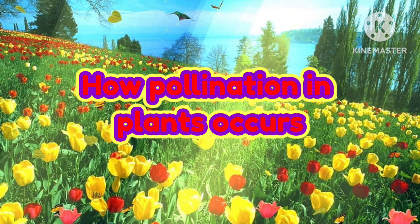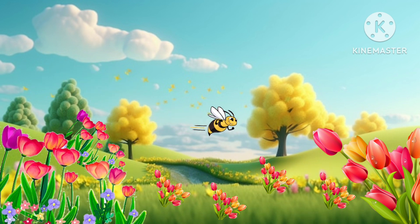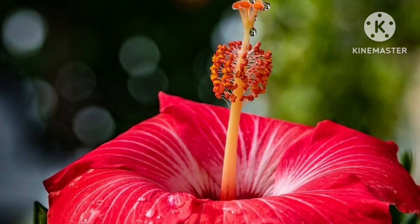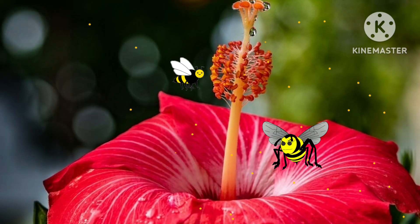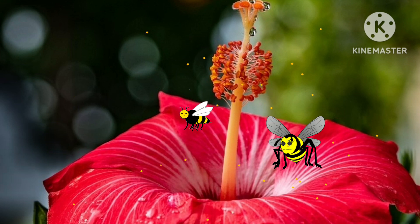Now let's study how pollination in plants occurs. Bright petals and fragrance of a flower attract insects. Insects arrive on the flower to collect nectar. Now if you look at this flower, this part is called stigma and this part is called anther, which contains pollen grains. The feeding insect rubs against the anthers, which rub pollen onto the insect.